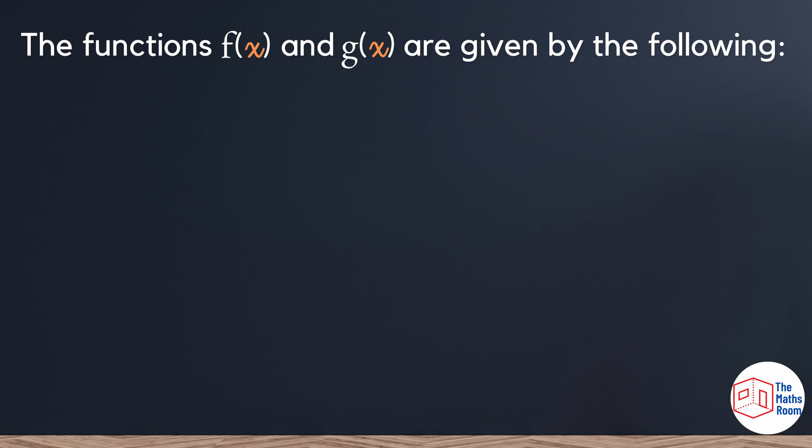Let's have a look at an exam question. The functions f of x and g of x are given by the following: f of x equals 7 minus 3x and g of x equals 2x.